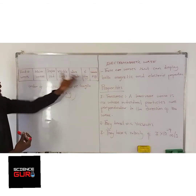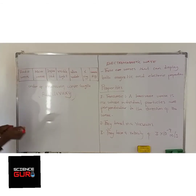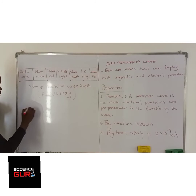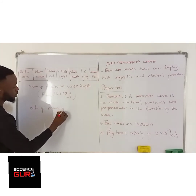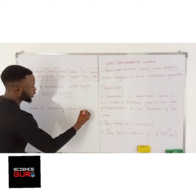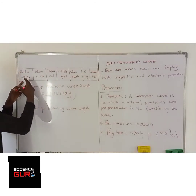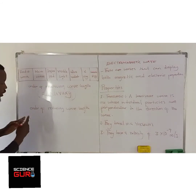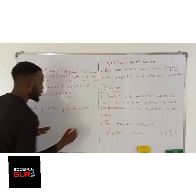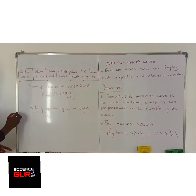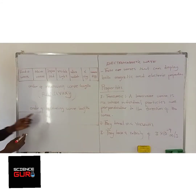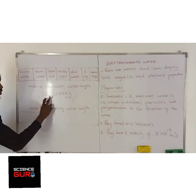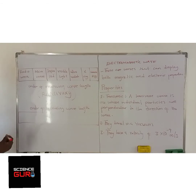These waves can also be organized in the order of reducing wavelength. In the exam, they may give you a table and ask you to fill it in, so you need to know the order. In the order of reducing wavelength, we summarize using the mnemonic ZUMBLA.